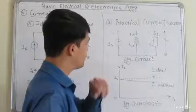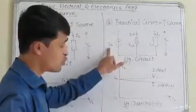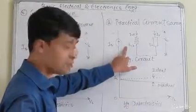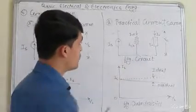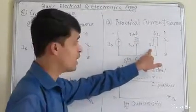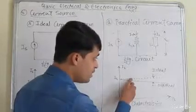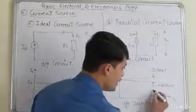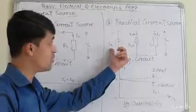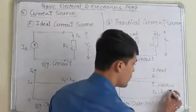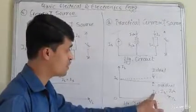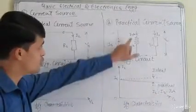For the practical current source, the source current has some shunt resistance. Some current will go through the shunt resistance — it is Ish, the shunt current — and Il is the current through the load resistance. So Il equals the total source current minus shunt current: Is minus Ish. The load current does not depend upon the load voltage; it depends upon the shunt current.